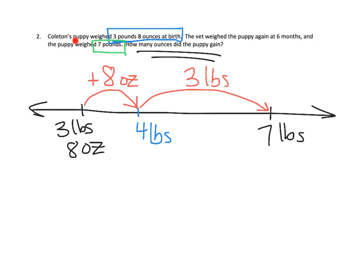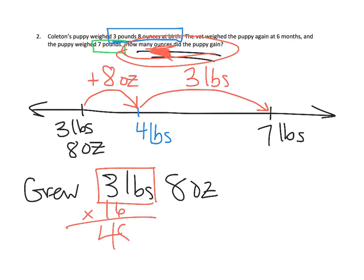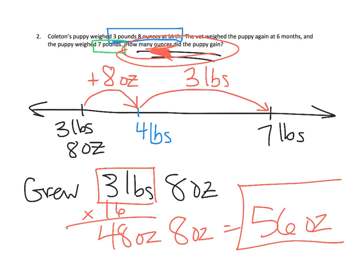How much did Colton's puppy gain from beginning to end? It grew three pounds eight ounces. But the question asks how many ounces the puppy gained. We have to convert three pounds into ounces — multiply by 16, because each pound is 16 ounces. That gives us 48 ounces, plus the other eight ounces, so that's 56 ounces altogether. Colton's puppy gained 56 ounces.